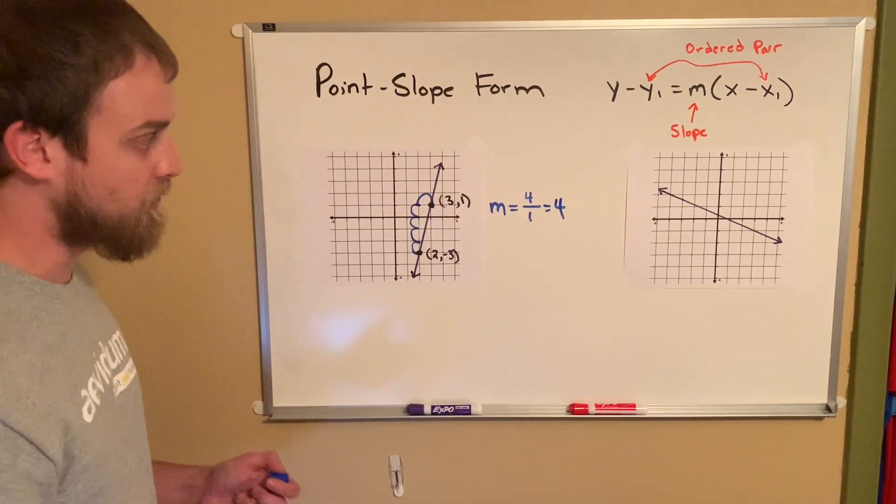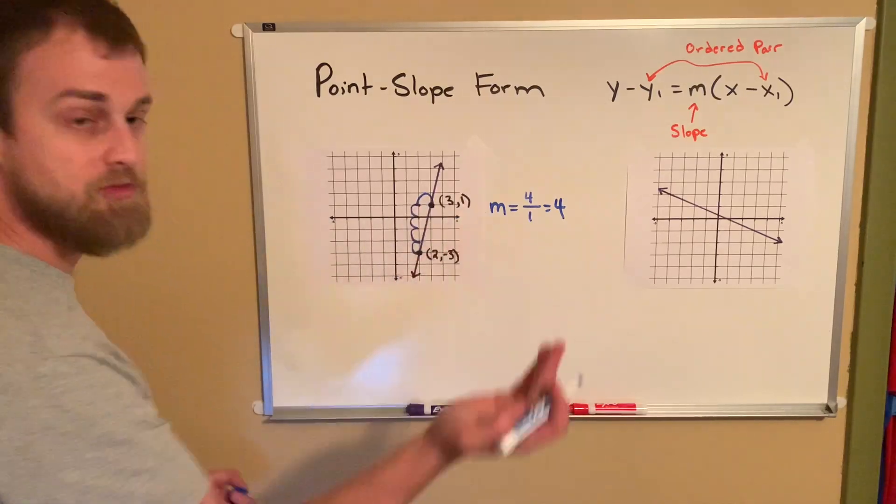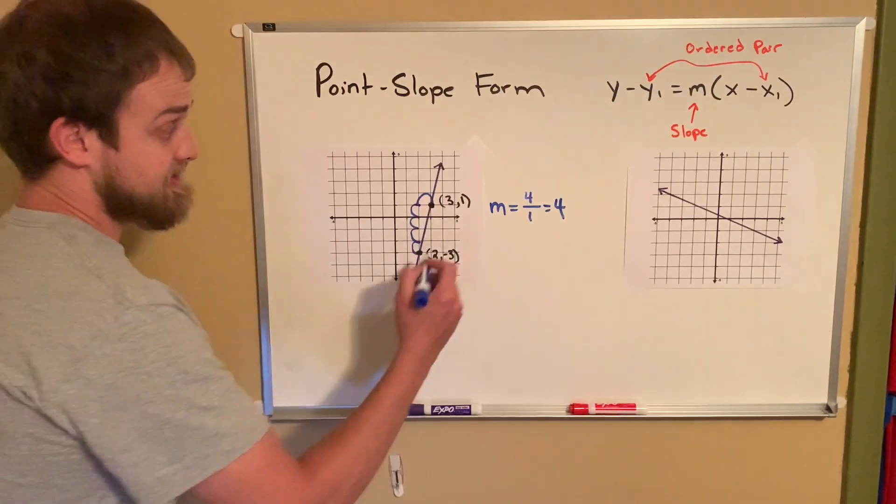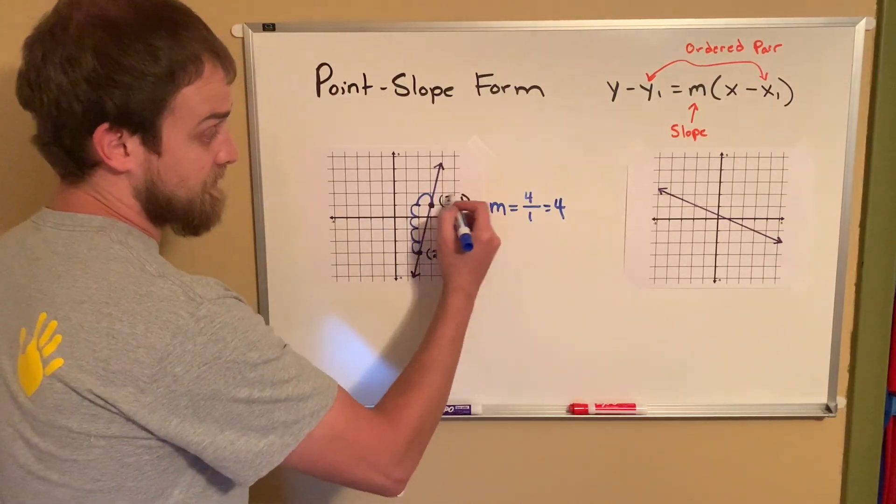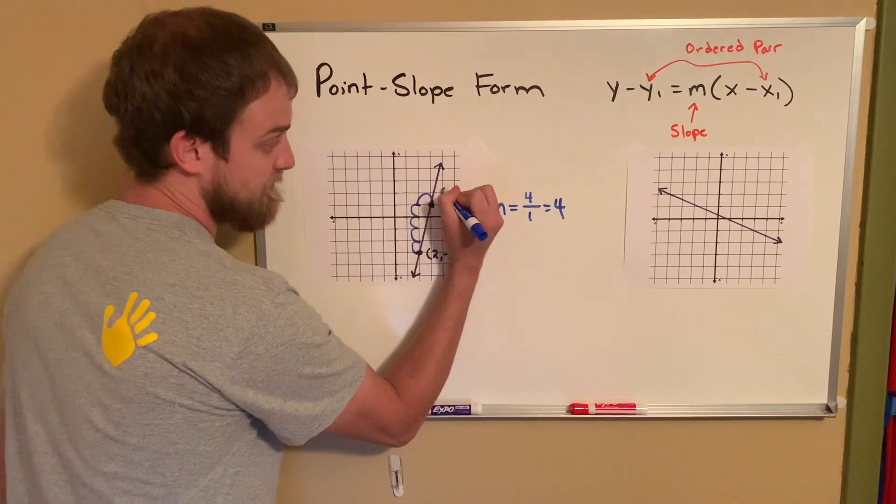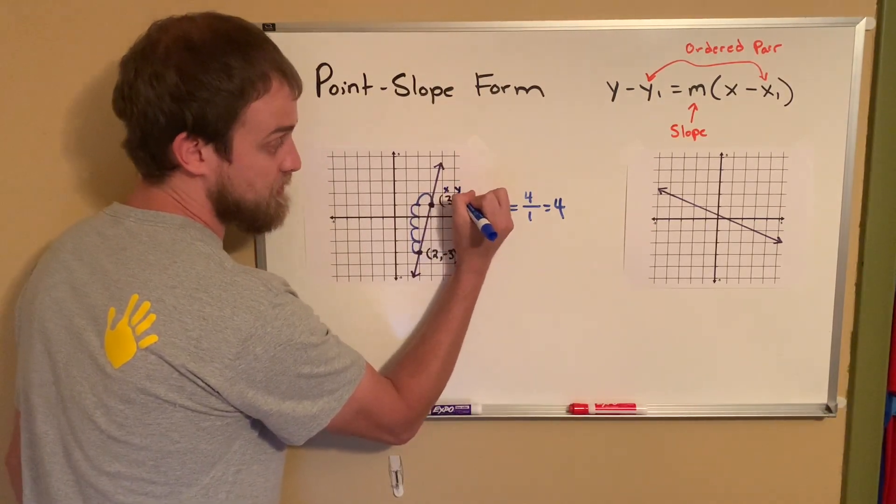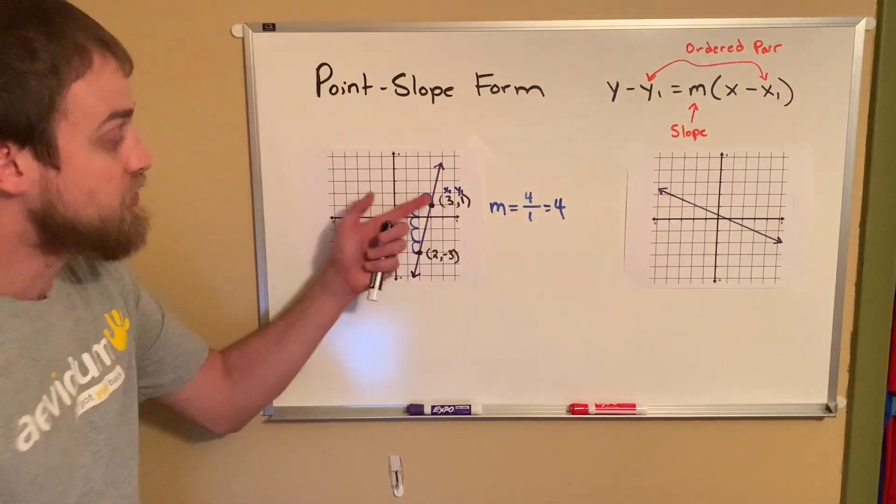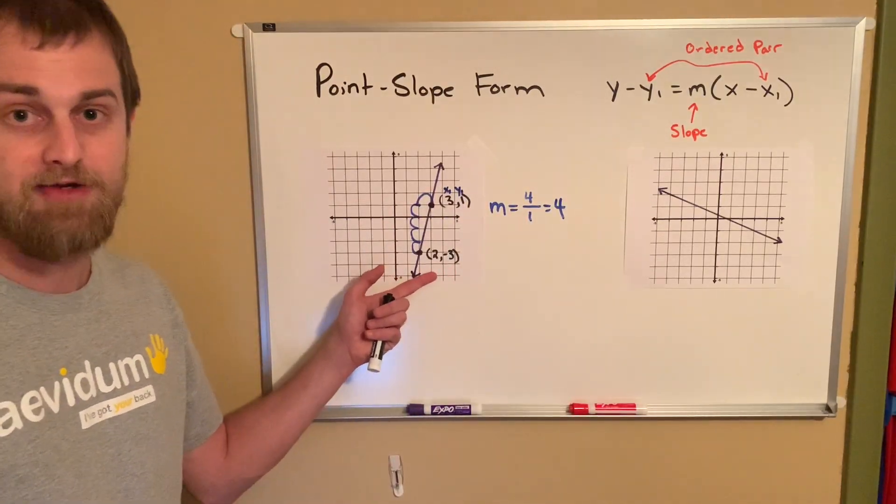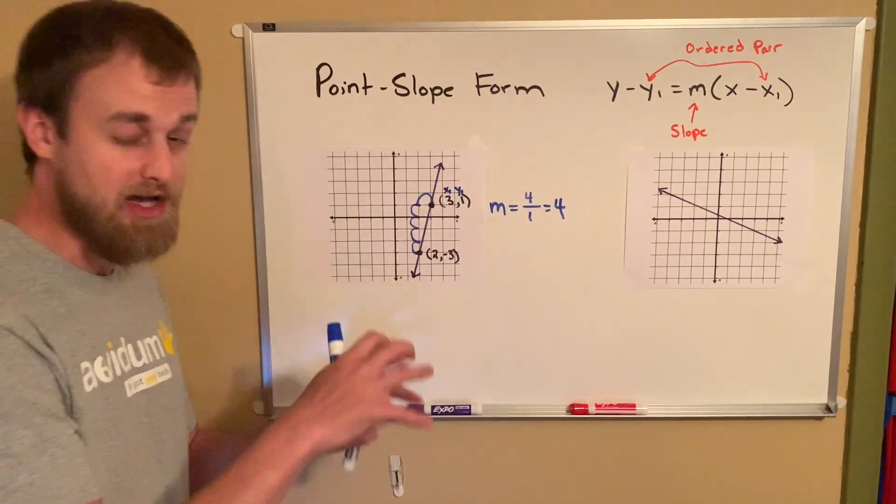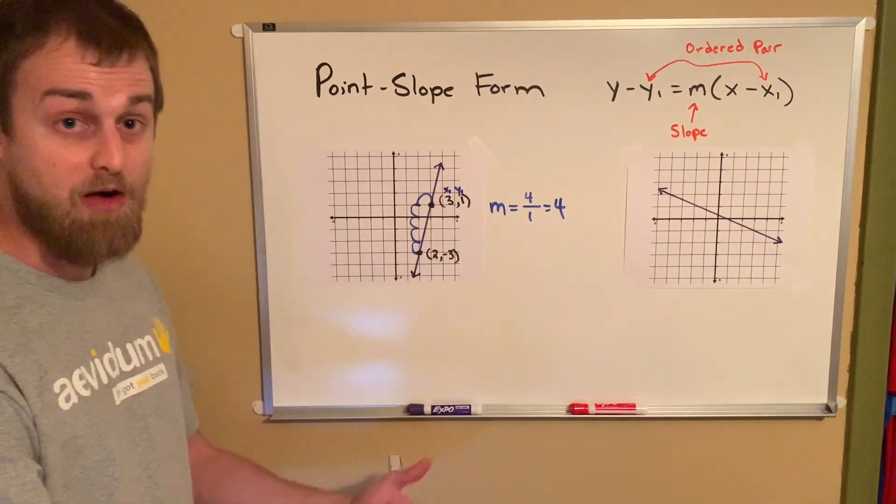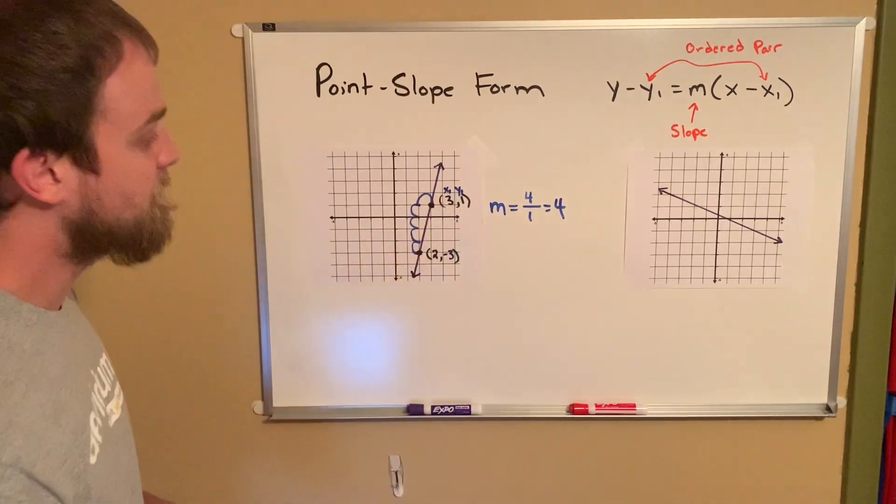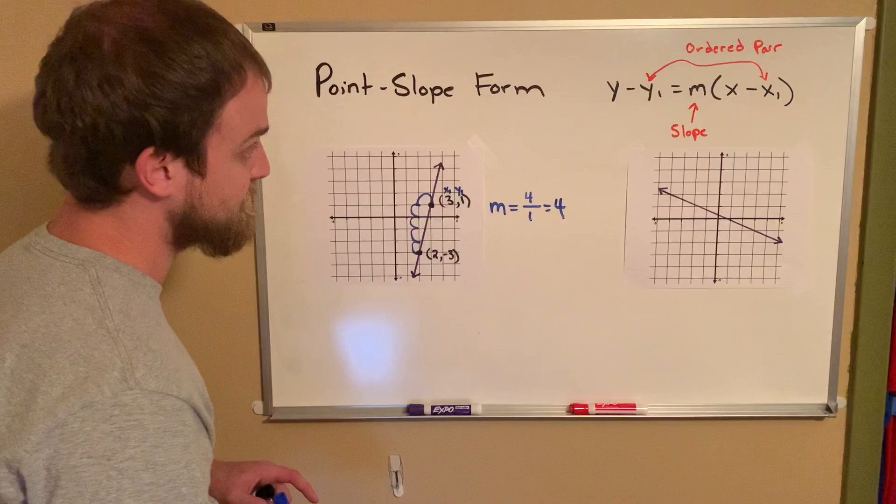Good. Now we need an ordered pair. Well, great. We have two identified. So we're actually ready to start building our equation. Well, let's see. I'm going to use this top guy right here, 3, 1. And we'll go from there. Remember, this is your x value. This is your y value. For our case, this is going to be x sub 1 and y sub 1. You could also use this ordered pair down here. And you would get a different looking equation. However, it would represent the same line, which is kind of the cool thing about point-slope form. So let's start building our equation.